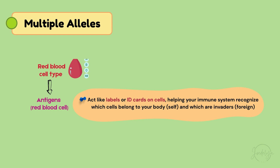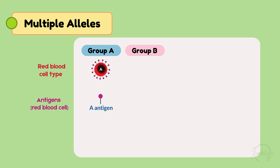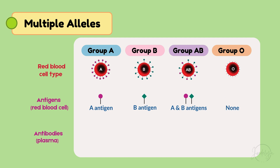Group A: you've got A antigens. Group B: you have B antigens. Group AB: you have both A and B antigens. Group O: you've got no antigens at all. Now let's talk about antibodies.